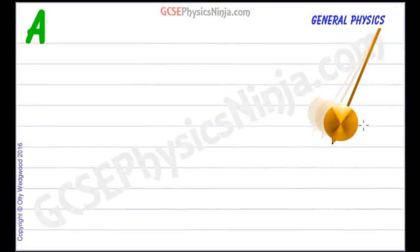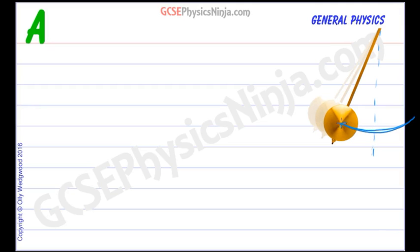So first of all, the time period of a pendulum is the time taken for it to swing one way and then back to where it started. You can measure the time from the centre line, called the fiducial point if you want, but it's probably easier to start timing when it's at one end.